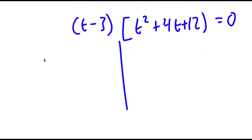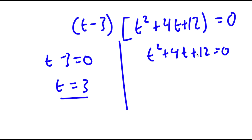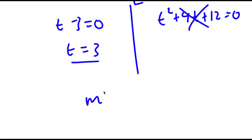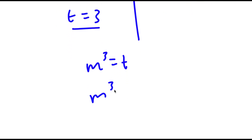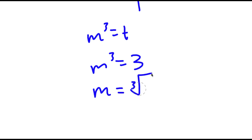This gives me two equations: t minus 3 equals 0, meaning t is 3; and t squared plus 4t plus 12 equals 0, which results in no real solutions. So t equals 3 is my only value. Remember we set m to the power of 3 equal to t, so if m cubed equals 3, then m is equal to the cube root of 3.